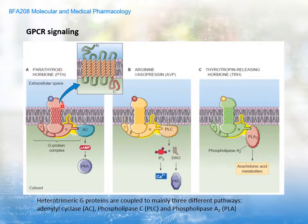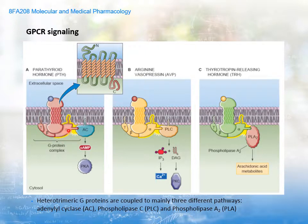In the first example — example A — you have PTH, parathyroid hormone, whose receptor interacts with a G-alpha-S stimulatory subunit that, once detached after activation, stimulates adenylyl cyclase, resulting in increased production of cyclic AMP. This is an alpha-S subunit pathway.